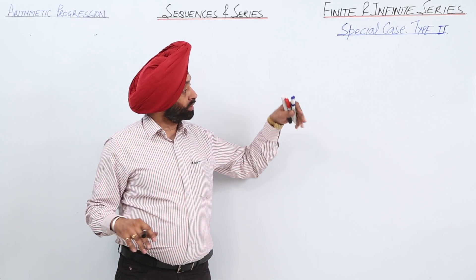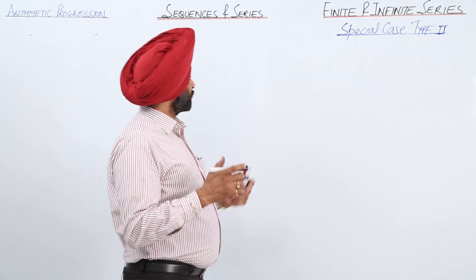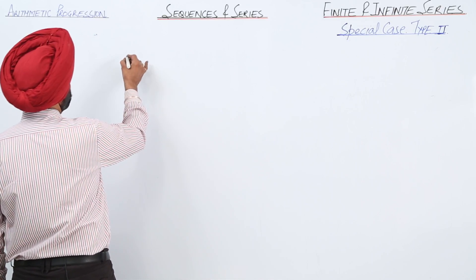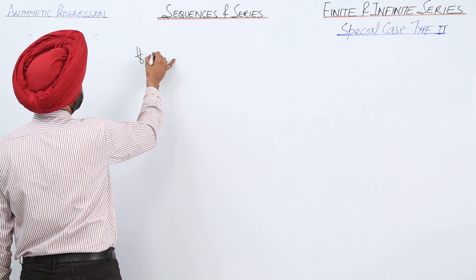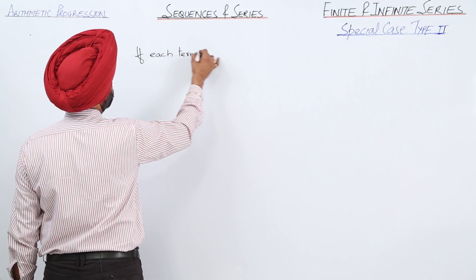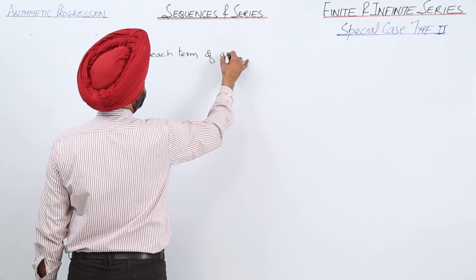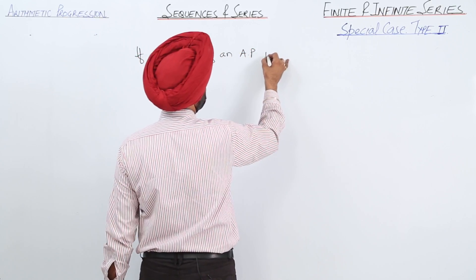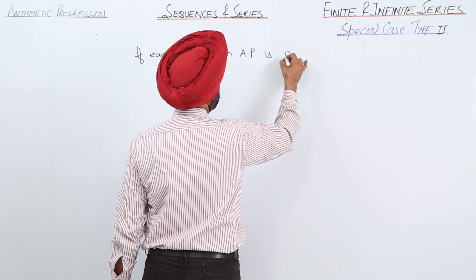Now special case for type 2. Look what I'm writing here. If each term of an AP is increased,